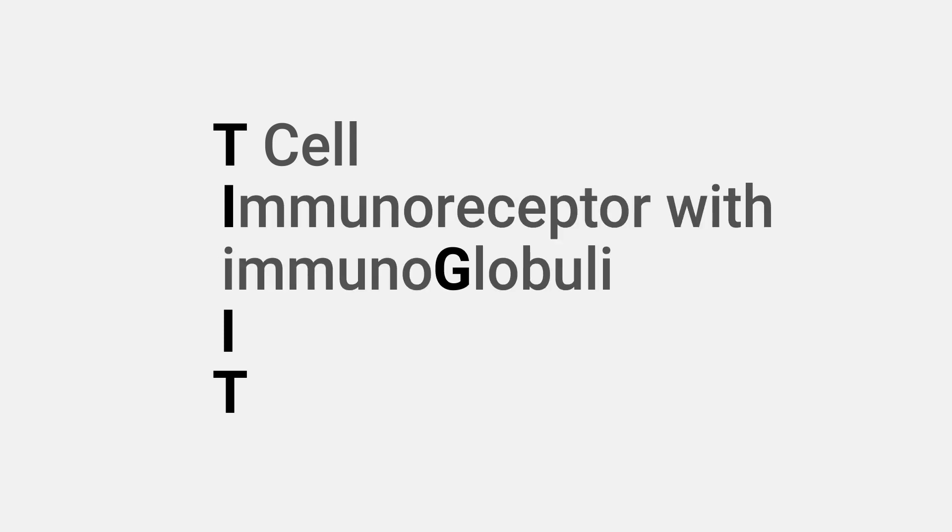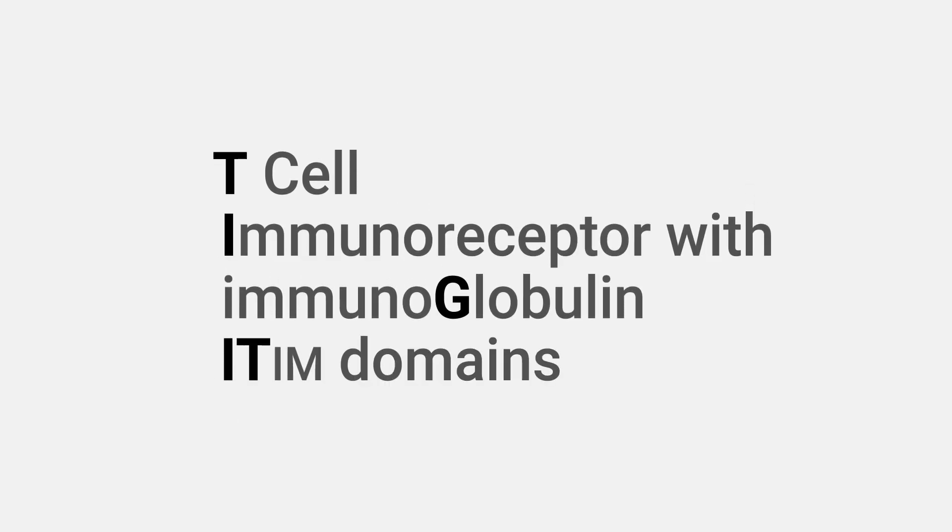TIGIT is an immune checkpoint that's expressed on certain subsets of immune cells. It inhibits activation of those cells and inhibits the ability of those cells to recognize and destroy pathogens or tumor cells.